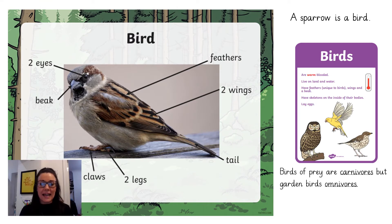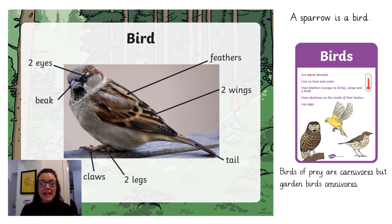In the picture on this slide you will see a sparrow. These are commonly seen in our garden. A sparrow is a bird. It has two eyes, a beak, claws, two legs, a tail, two wings and feathers. Feathers are unique to birds. They also lay eggs. The common garden bird eats a diet of worms, nuts and seeds, which would make it an omnivore.